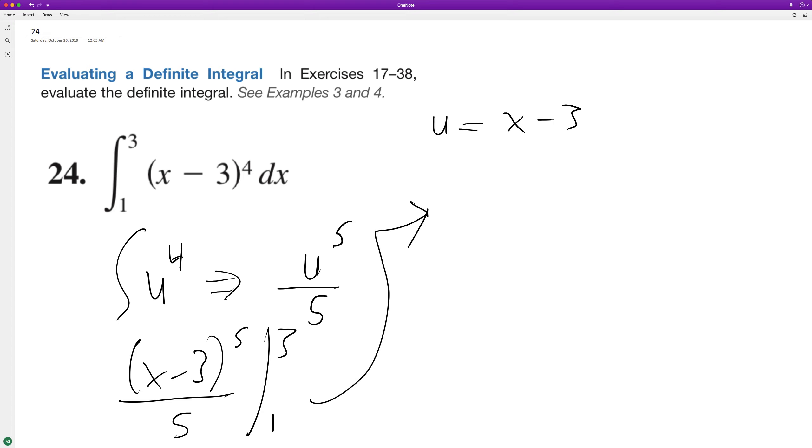So integrating this, we get (3 minus 3) raised to the 5th over 5. This is just 0. It's kind of silly.